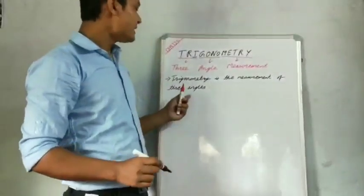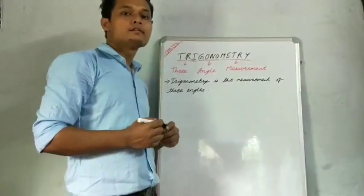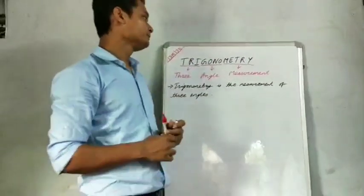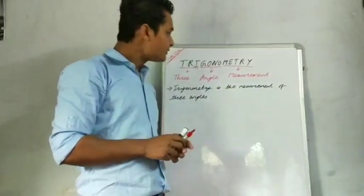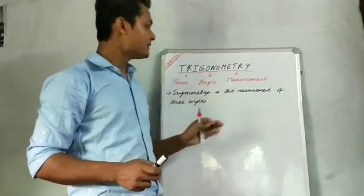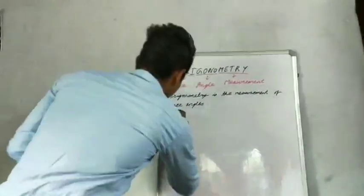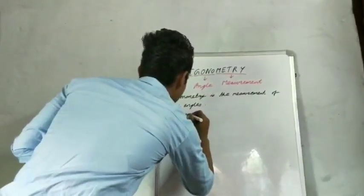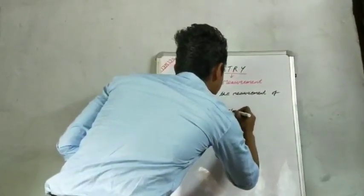Trigonometry is the measurement of three angles. Which structure has three angles? Obviously, a triangle has three angles. Now, what is the application of Trigonometry? Trigonometry has a wide range of applications in our day-to-day life. The main application is that Trigonometry deals with the measurement of distance, height, and slope.